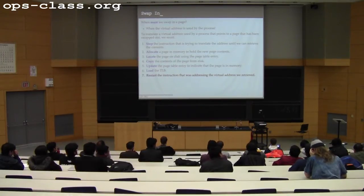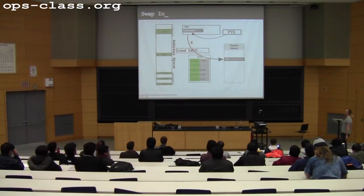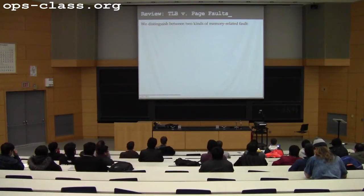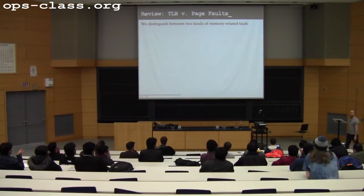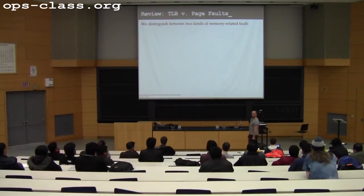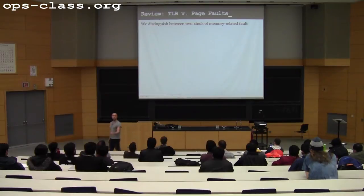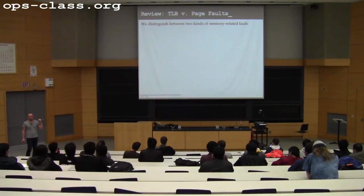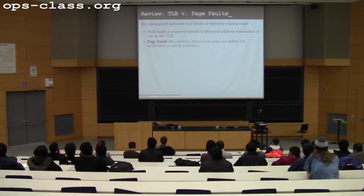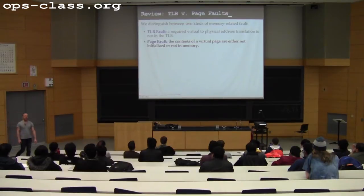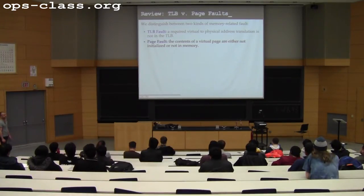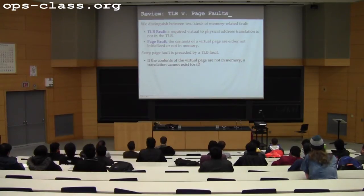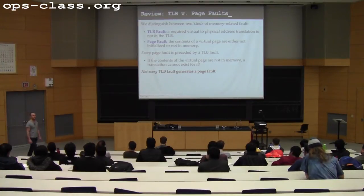There are two types of memory-related faults. A TLB fault can be handled without disk IO — the contents are in memory and I just need to load the TLB entry. A page fault means the page is not resident in memory, or may not exist yet, requiring disk operations. Every page fault is preceded by a TLB fault, but not every TLB fault generates a page fault — hopefully as few as possible do.